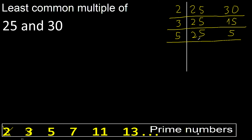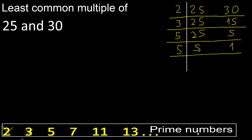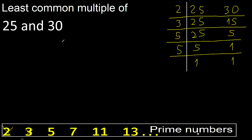Yes. 25 divided by 5 is 5. 5 divided by 5 is 1. 5 divided by 5 is 1. 1 cannot be divided by 5, therefore equal. 1, 1.